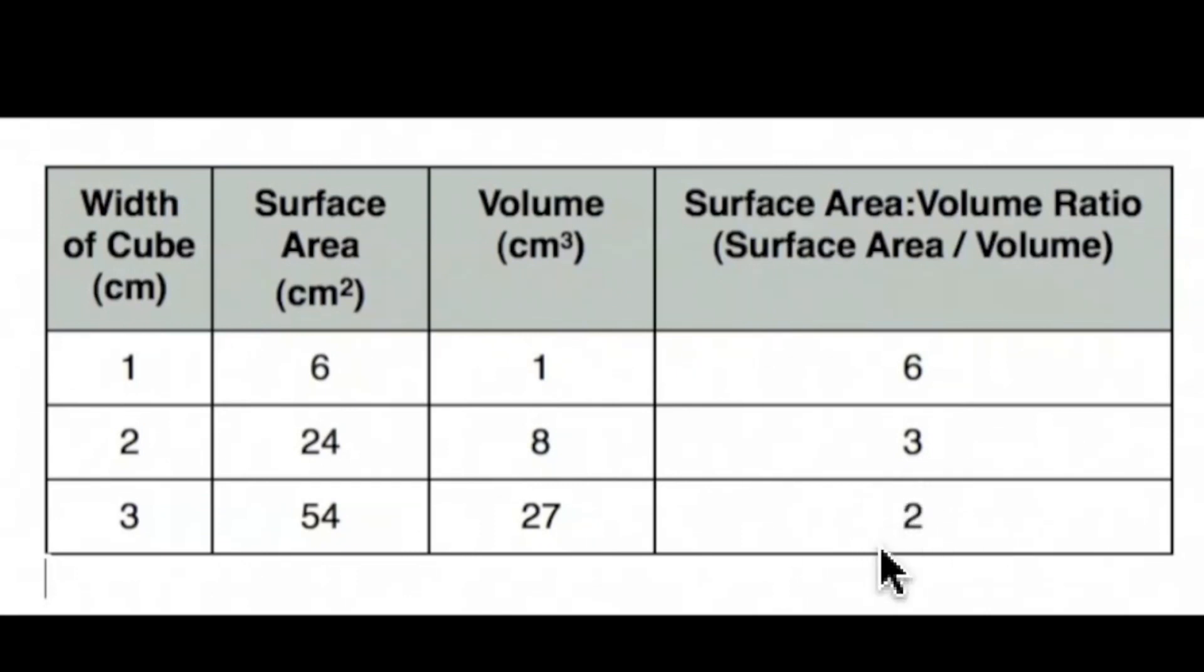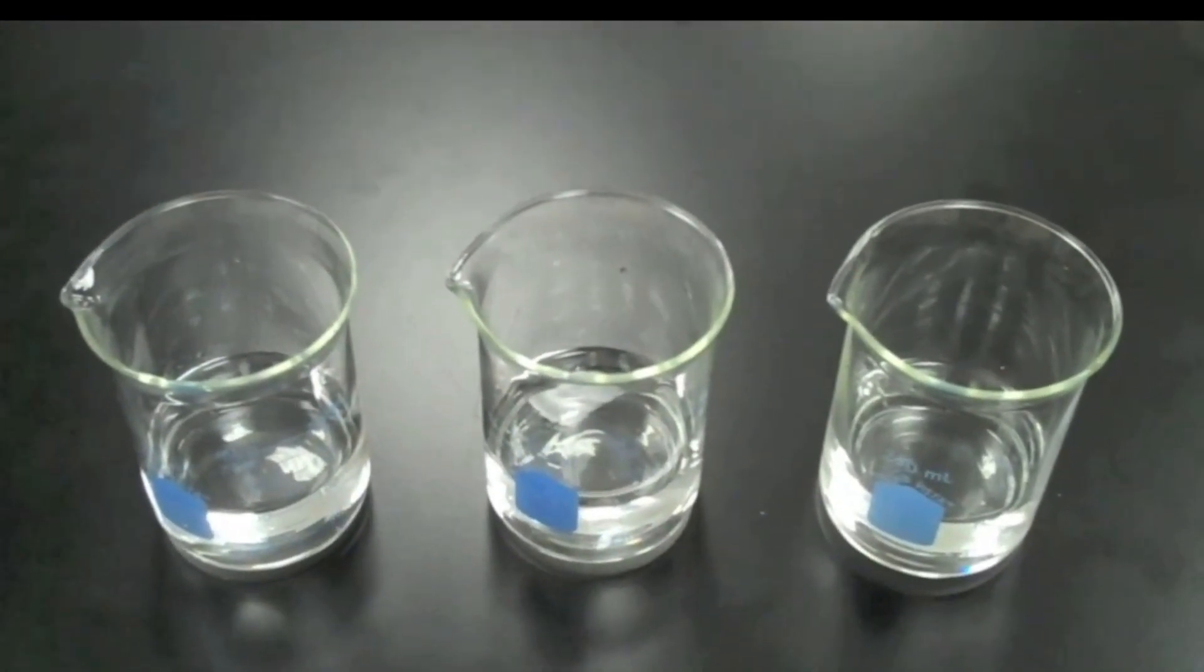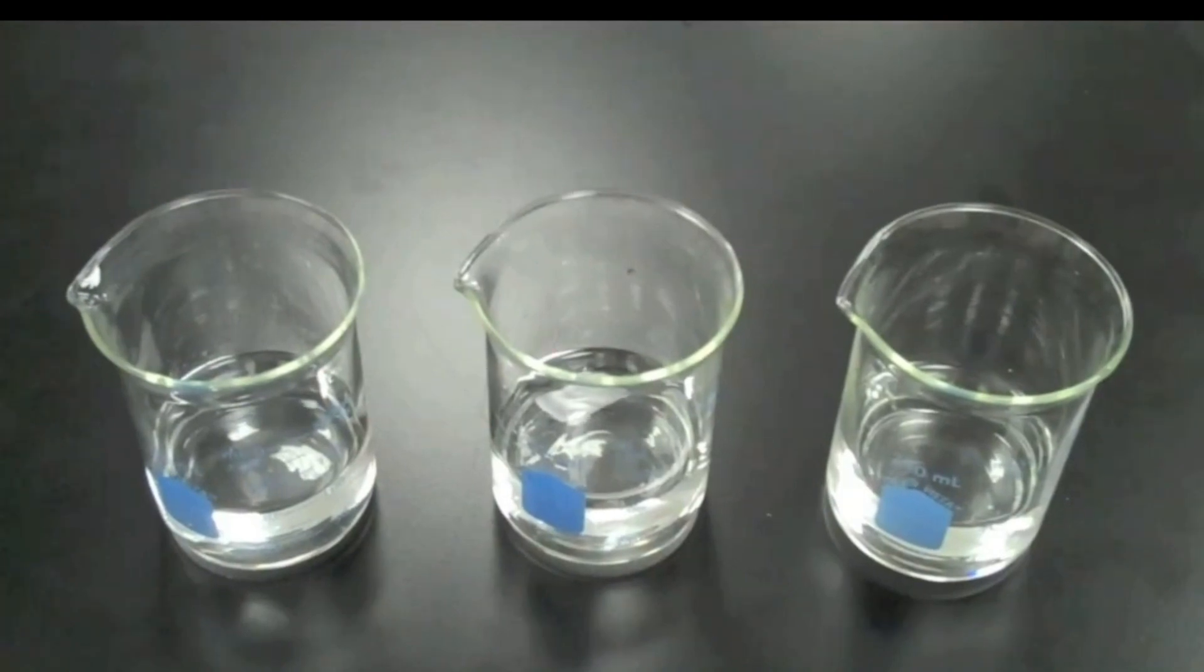What this means is that the greater the size of the cell, the less surface area it has relative to its volume. Here our beakers of hydrochloric acid represent the raw materials which need to enter the cell from the outside in order for its metabolic reactions to take place.